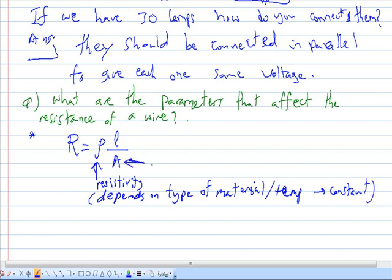A is the area, the cross-sectional area of the wire. L is the length of the wire. As the length increases, while these two are constant, the resistance will increase.